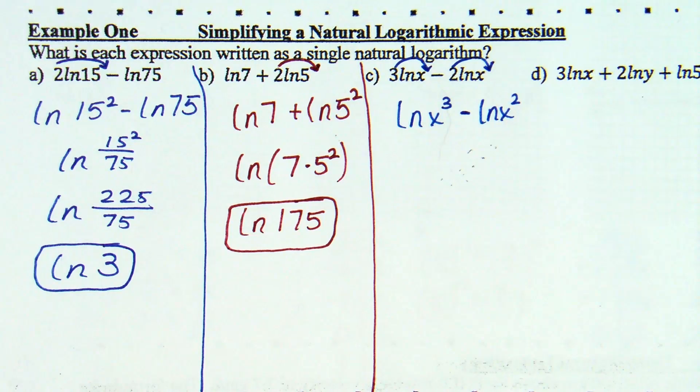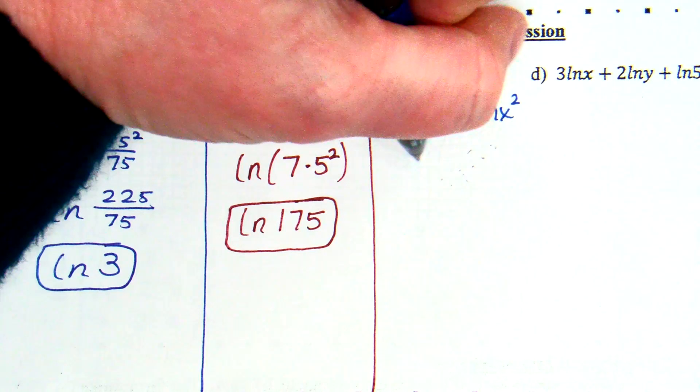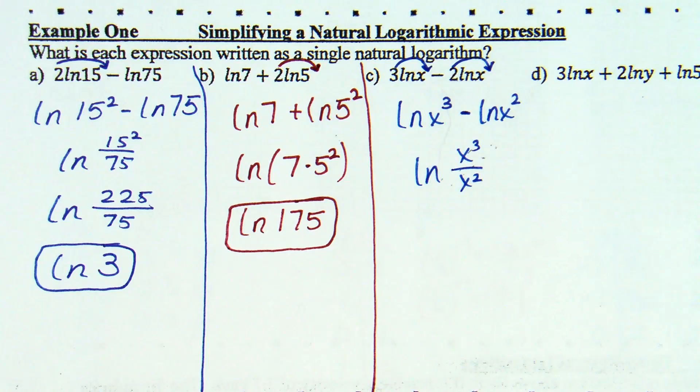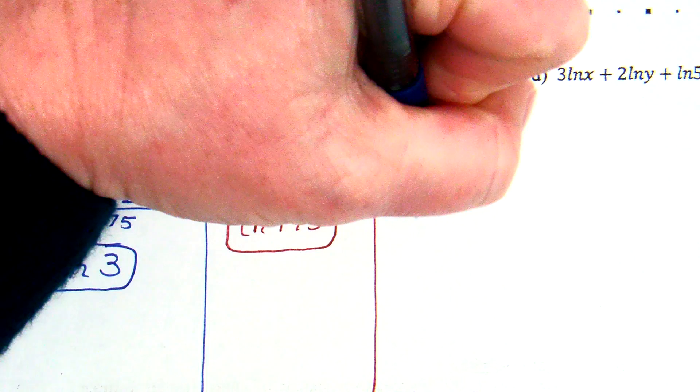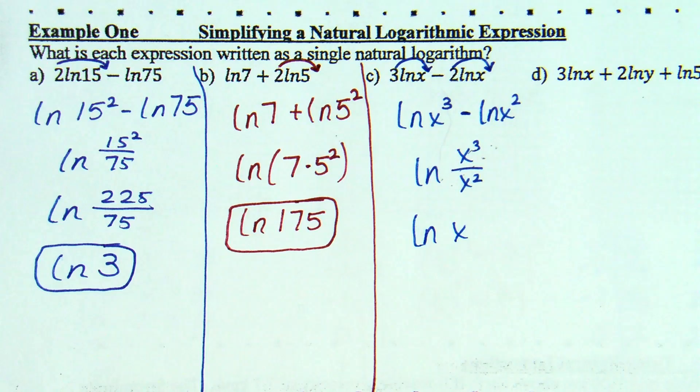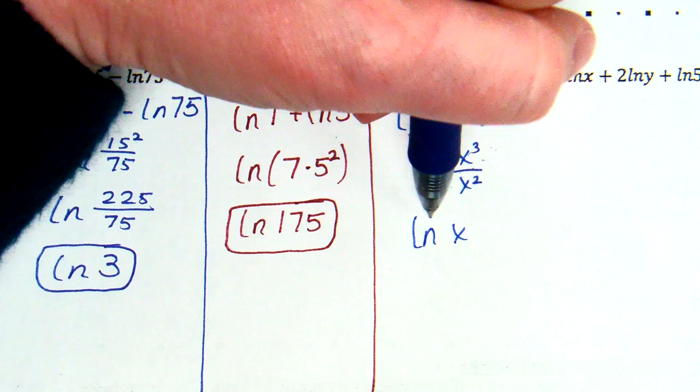Two logs being subtracted can be rewritten as one log where the insides are divided. So, I have natural log of X cubed divided by X squared. Remember, you can go one more step. X cubed divided by X squared. Base is the same. When you're dividing, you subtract exponents. So that becomes X to the first. So natural log of X.